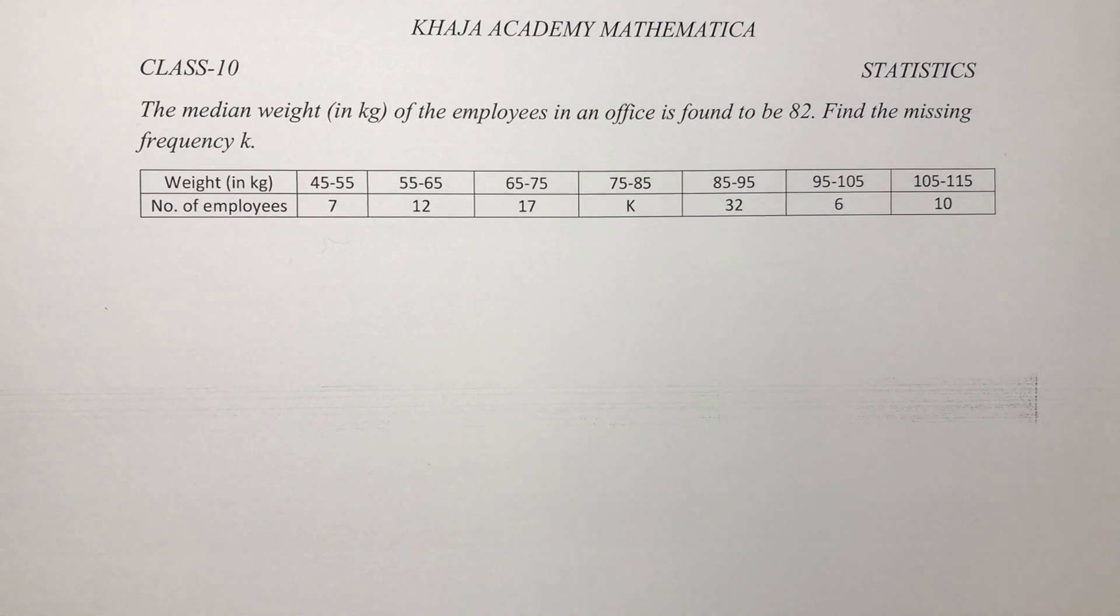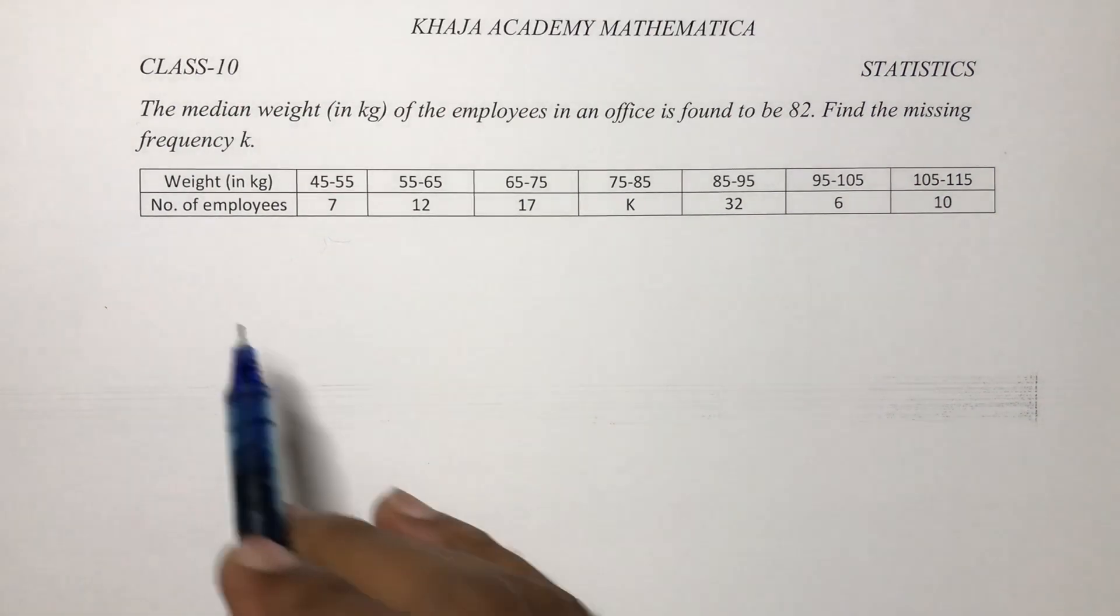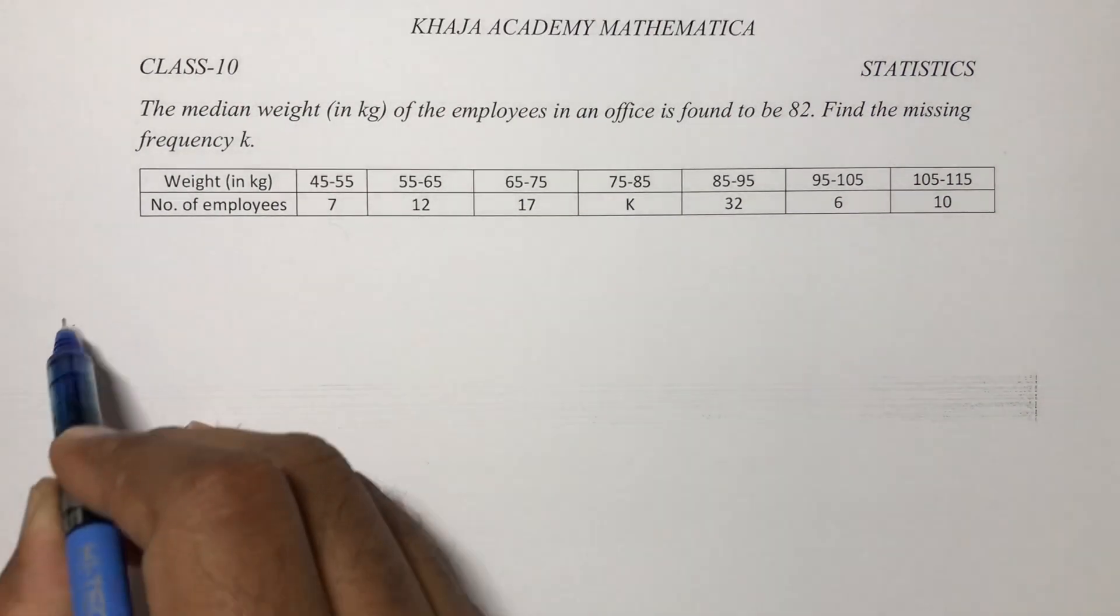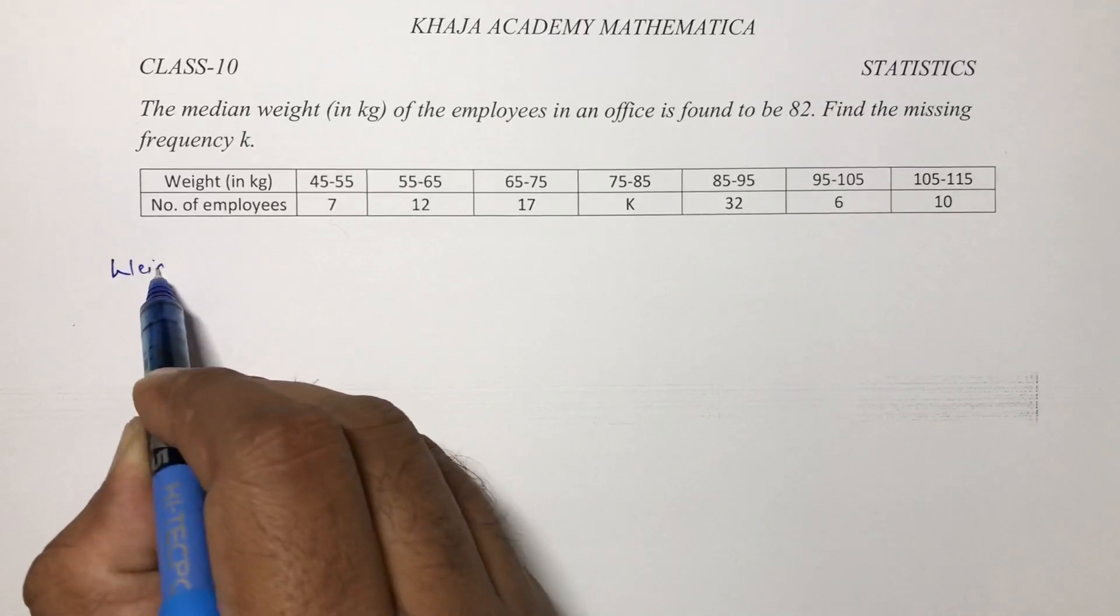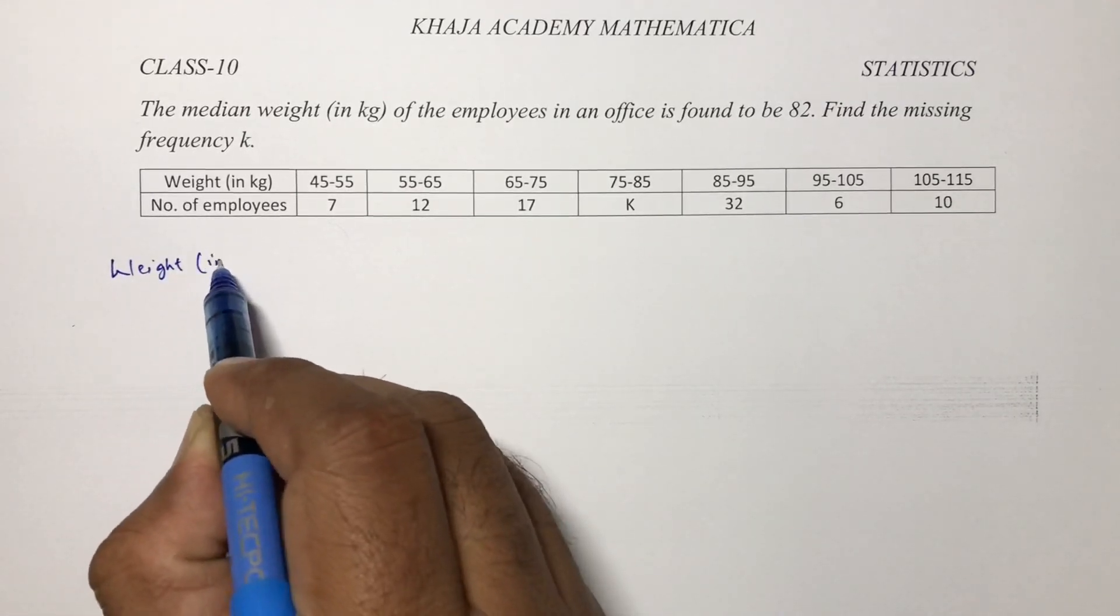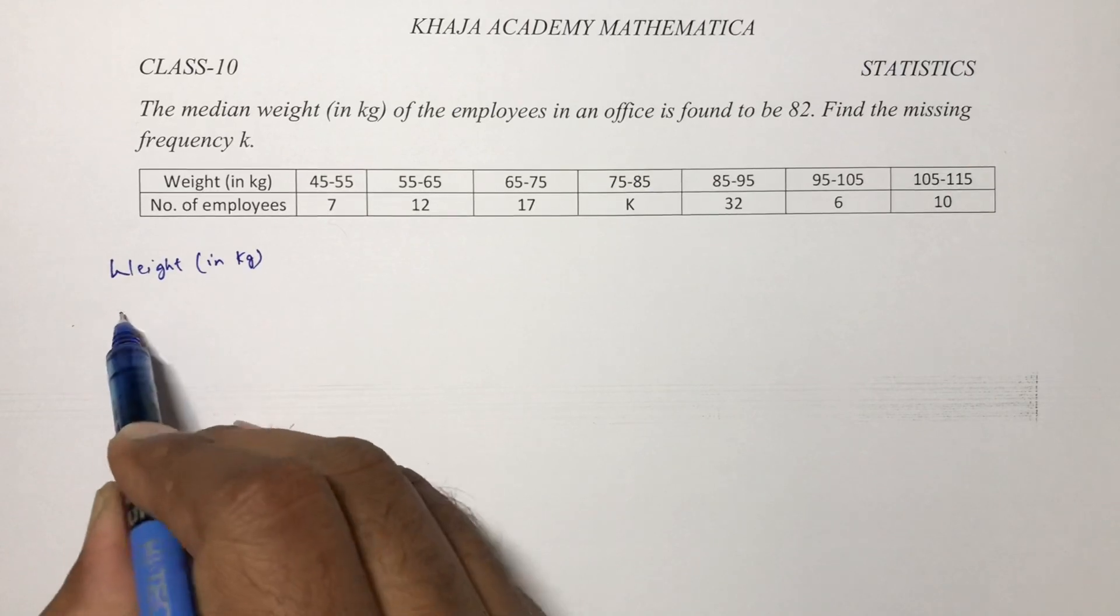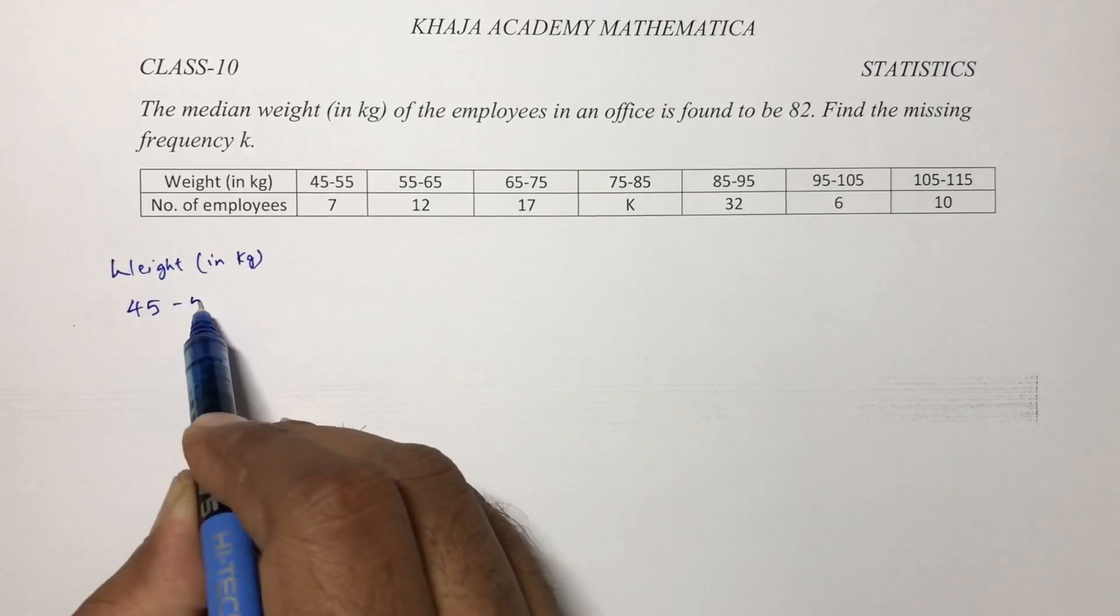The median weight of the employees in an office is found to be 82. Find the missing frequency k. Here weight is the class, and they give in ranges. That is 45 to 55, 55 to 65.